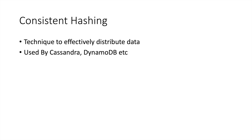Today we are going to talk about consistent hashing. Imagine you have a huge amount of data which cannot be stored on a single machine — you want to distribute the data across many servers. Consistent hashing is a technique to help you distribute that data across machines effectively. A lot of databases like Cassandra and DynamoDB use this technique to distribute data effectively across many servers.